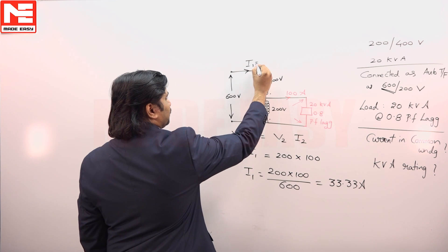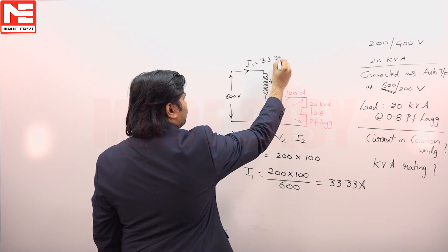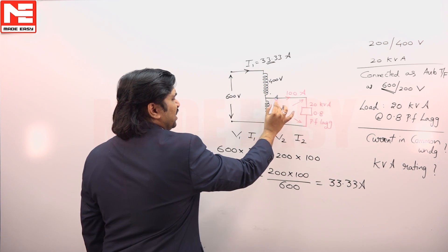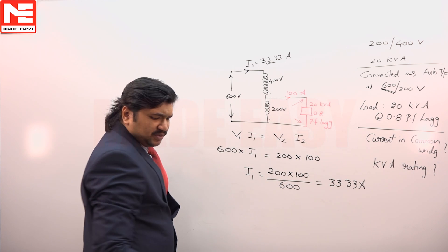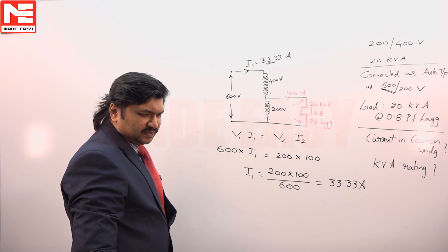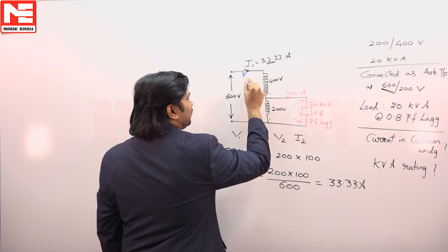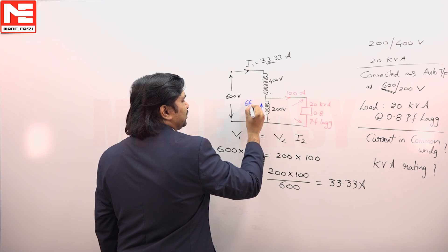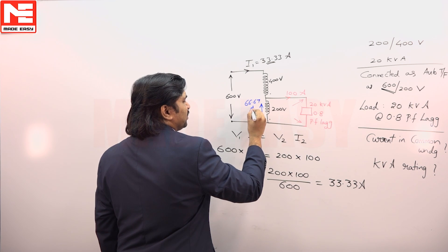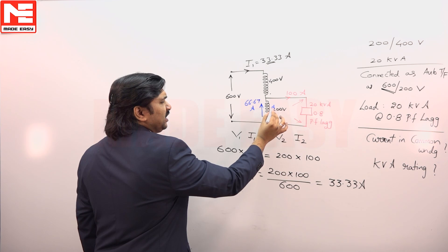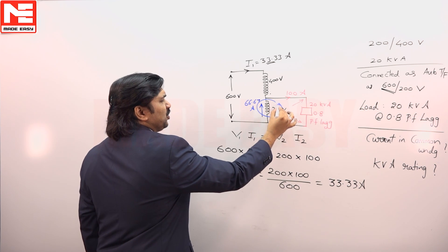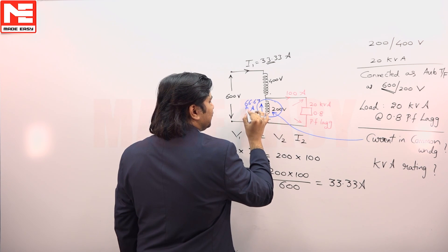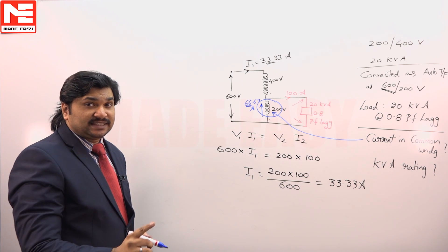33.33 amperes. If i1 is 33, if the load current is 100, what is the current in this? 33 through this, the current should be 66.67 amperes, then only the current can be 100. So what is the current in the common winding? The answer is current in the common winding is 66.67 amperes.